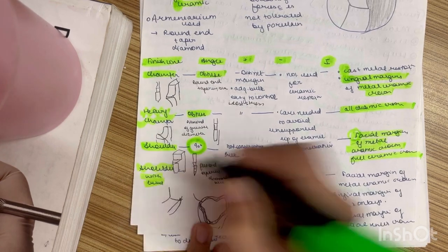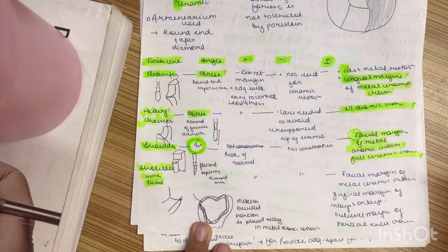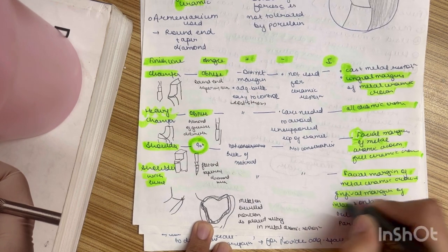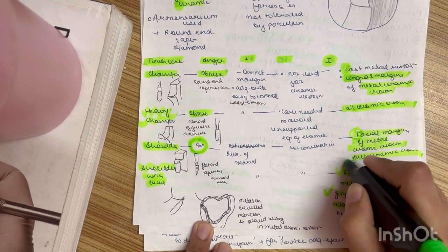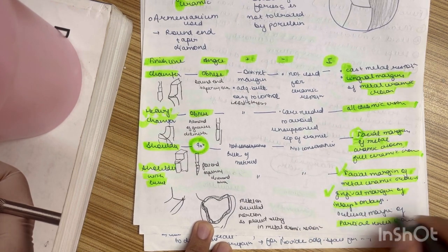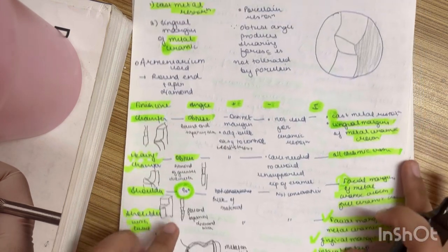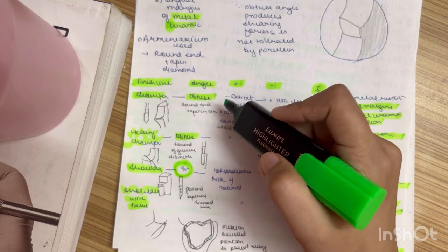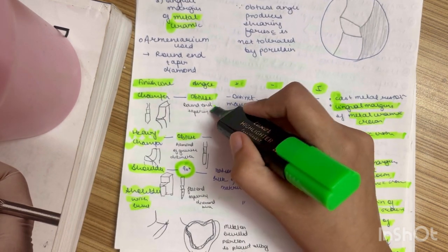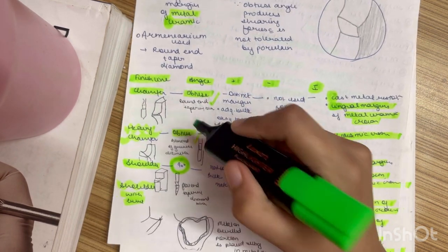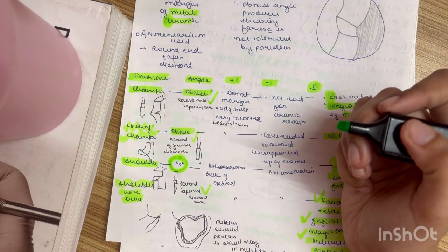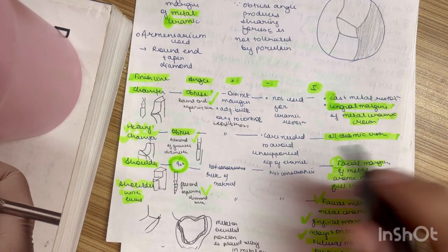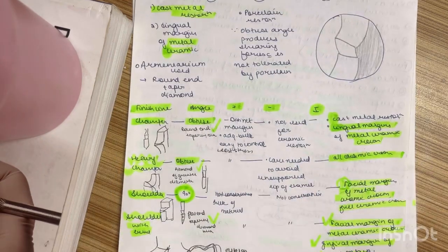Then shoulder with bevel. So in this facial margin of the metal ceramic crown. Gingival margin of the inlays and onlays. Occlusal margin of the partial veneer crown. Sometimes what happens is you need to know the burrs also. So this is like round and tapering burr chamfer will form with diamond. Heavy chamfer flat and tapering diamond. You will get shoulder with shoulder or shoulder with bevel. So you can draw this table.